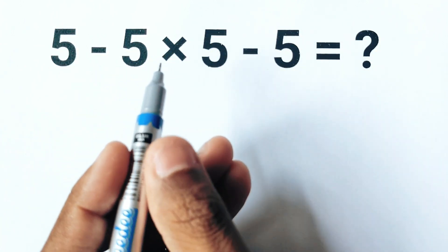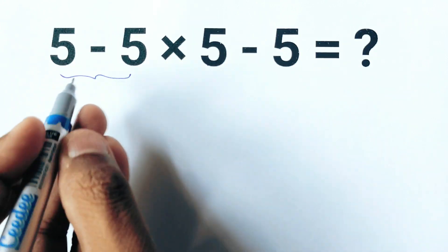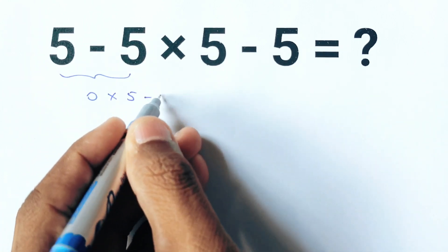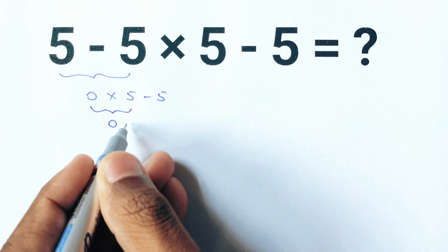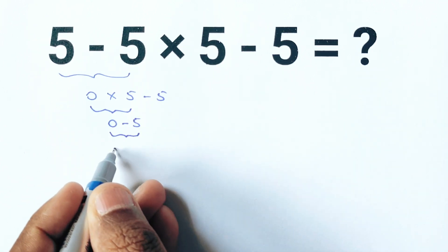At first glance you might be tempted to go from left to right. 5 minus 5 is 0 and the expression now looks like this. Then 0 times 5 is still 0. Now the expression becomes 0 minus 5. So 0 minus 5 gives negative 5.